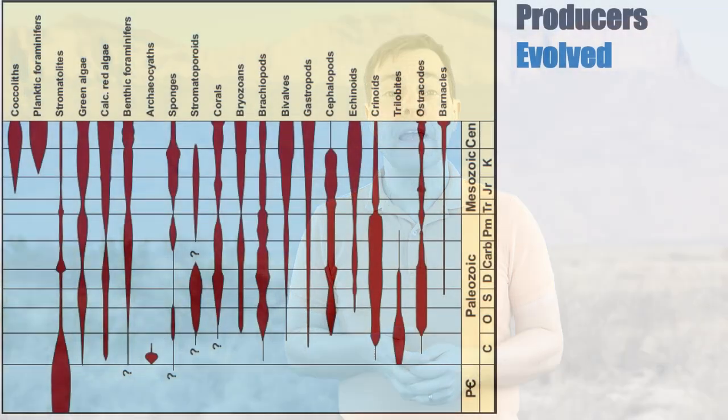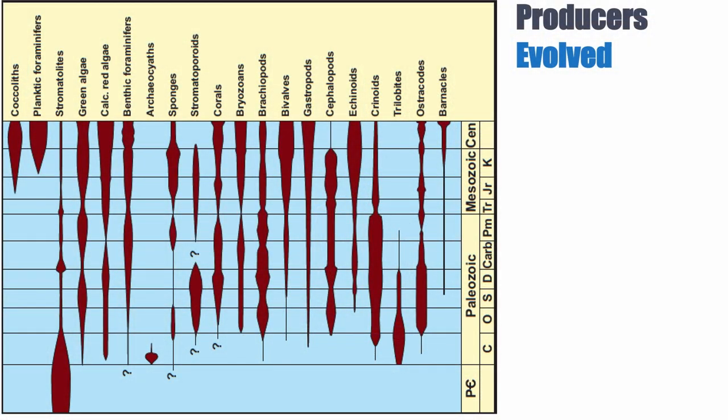This is really important because if you look at the history of carbonate producers, the producers of carbonates have changed through time, significantly changed through time. This shows you the different known carbonate producers. Not all of these are reef producers, this is just a general figure. The thickness of the line shows how abundant they were. You can see that things actually do change from the Precambrian all the way to today.